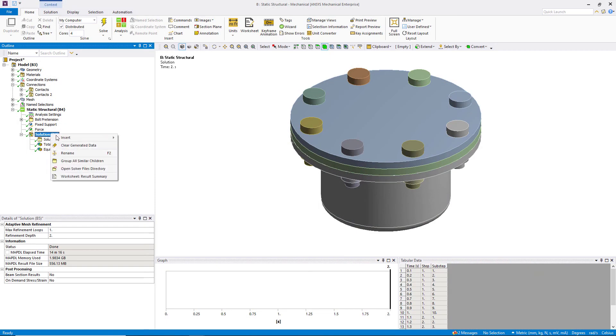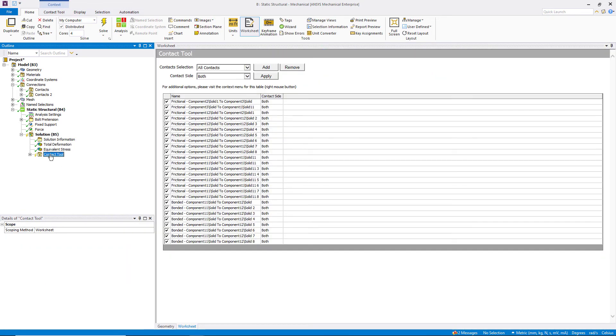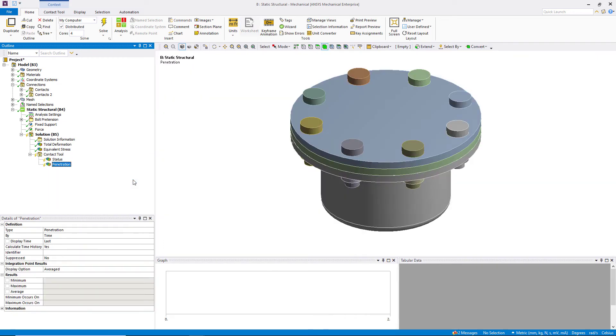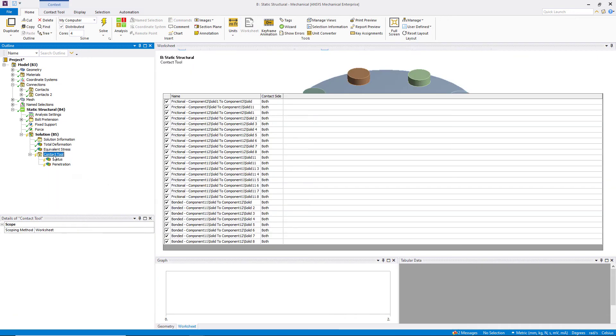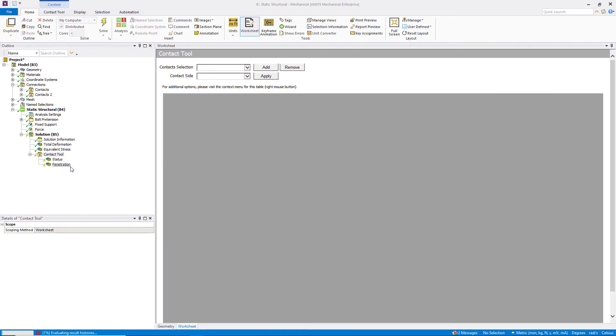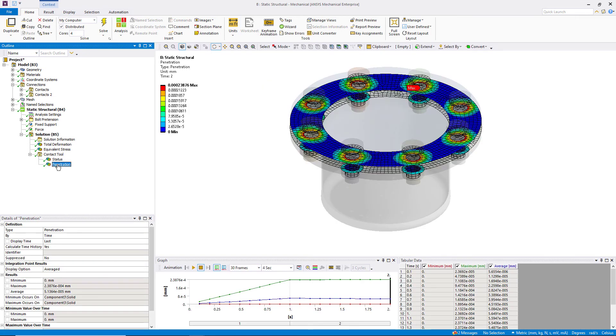In ANSYS Mechanical, the contact tool can be used for post-processing such results. It can extract results such as contact penetration and gaps, which can be used to verify the simulation results.